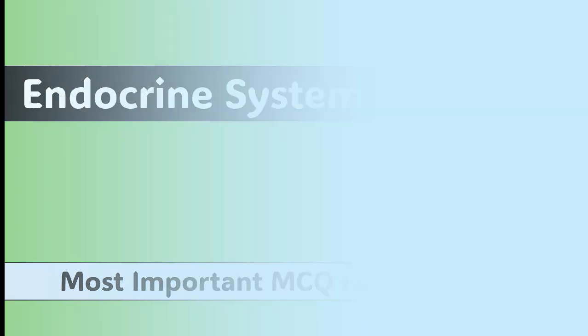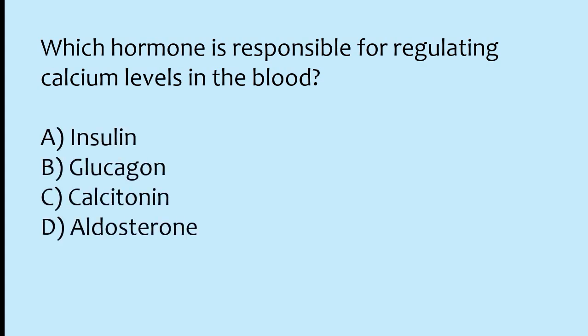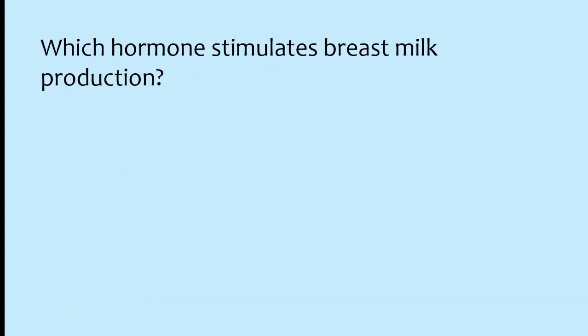Which hormone is responsible for regulating calcium levels in the blood? Options: insulin, glucagon, calcitonin, aldosterone. The correct answer is option C: calcitonin hormone is responsible for regulating calcium levels in the blood.